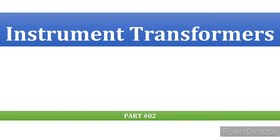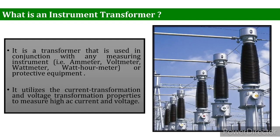Today we are going to discuss about instrument transformers — this is Part 2, and we are basically focusing on potential transformers in this lecture. An instrument transformer is a transformer used in conjunction with any measuring instrument, which could be an ammeter, voltmeter, or any protective equipment. The most common usage is to operate instruments or metering from high voltage or high current circuits, safely isolating secondary control circuitry, and utilizing current and voltage transformation properties to measure high AC current and voltages.